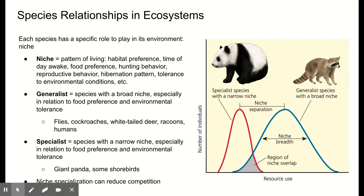Now let's talk about the relationships species have in ecosystems, starting with the role a species plays in its environment — called its niche. A niche is the pattern of living that an organism has, including everything about their life history: where they live, habitat preference, what time of day they're active (diurnal vs. nocturnal), what they eat, whether they're an omnivore or focused on one type of plant, their hunting behavior, whether they hibernate, and what environmental conditions they can tolerate — salty water, fresh water, or brackish water.